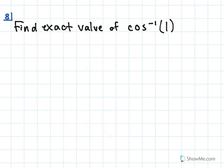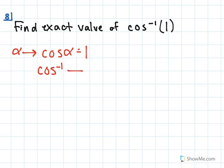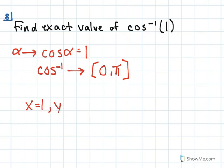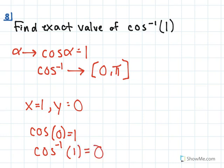In this question we're asked to find the exact value of cosine inverse of 1, which means we're looking for an angle theta such that cosine of theta equals 1. With inverse cosine we're restricted to the interval 0 to pi. Looking at the graph of cosine inverse of x, where x is 1, y equals 0. Or, remembering trig values, cosine of 0 equals 1. So cosine inverse of 1 equals 0.